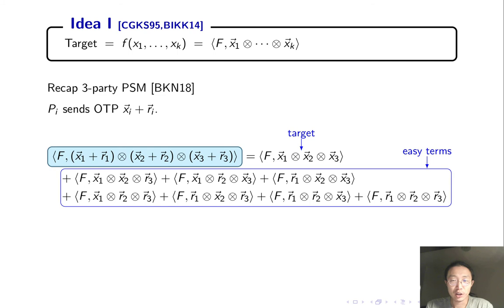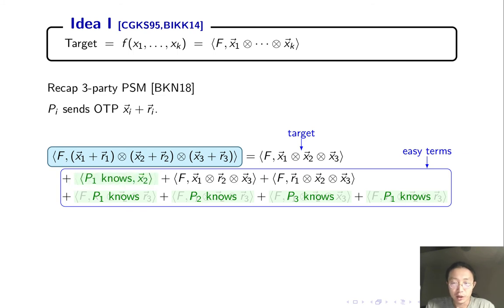The first is the target. It's what we want to compute. The rest seven terms are what we call easy terms. Look at the first term in the last row. Party P1 knows X1, knows R2, R3 from the shared randomness, and F is public. So party P1 knows this term. Similarly, for every term in the last row. Then look at this term. The only thing P1 doesn't know is X2. So this term equals the inner product of something P1 knows and X2.